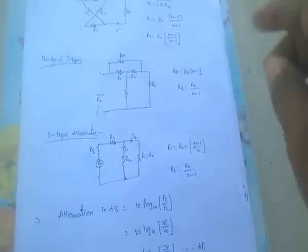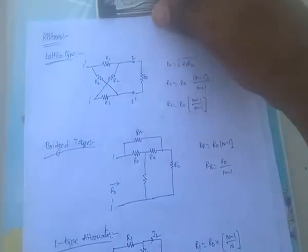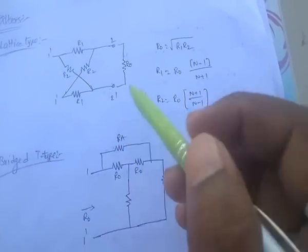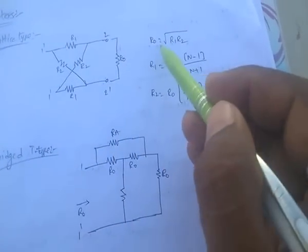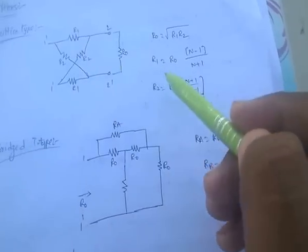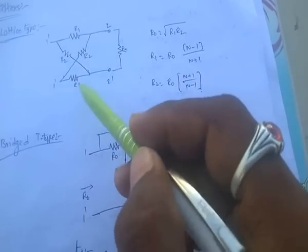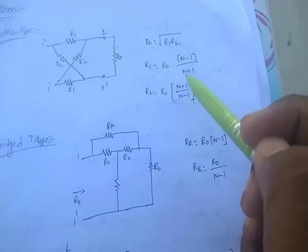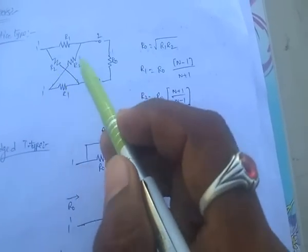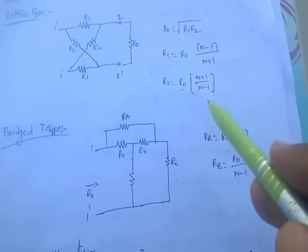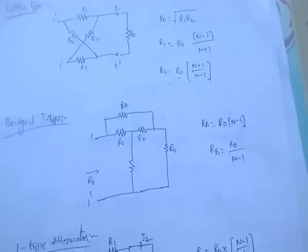Other attenuator types include lattice type and bridge type. For the lattice type attenuator: R0 = √(R1 × R2), R1 = R0 × (n−1)/(n+1), and R2 = R0 × (n+1)/(n−1).